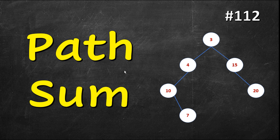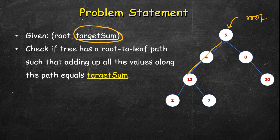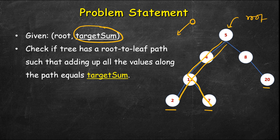This problem is called Path Sum. We are given a binary tree and we have to check whether there is a path from root to its leaf nodes such that the sum of values equals a given value. A tree node has a left pointer, a right pointer, and one integer value. We need to find whether such a path exists or not.